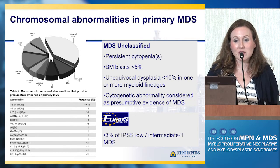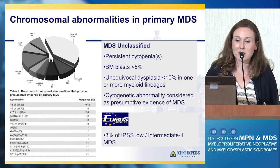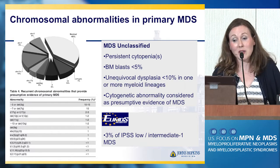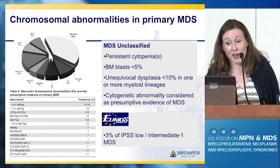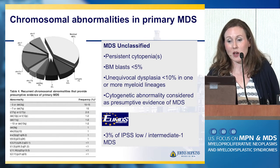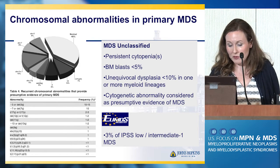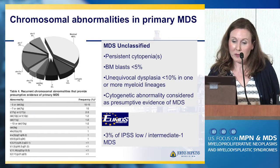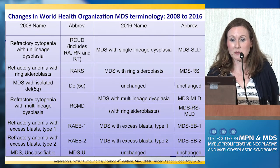But nonetheless, this still leaves a large number of patients that fall into the diagnostic category of MDS unclassifiable. They certainly have persistent cytopenias. They may have low blasts morphologically or by flow cytometry. And we don't have quite enough to make us feel good about how they're going to do because we're lacking some of the details at the time of diagnosis.